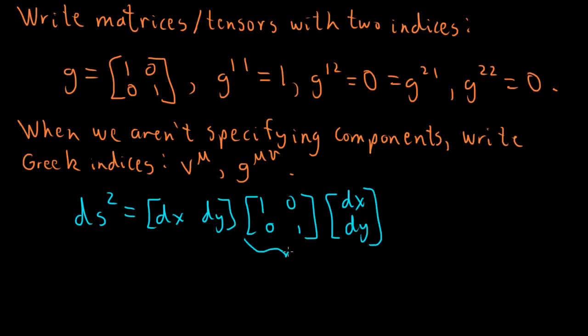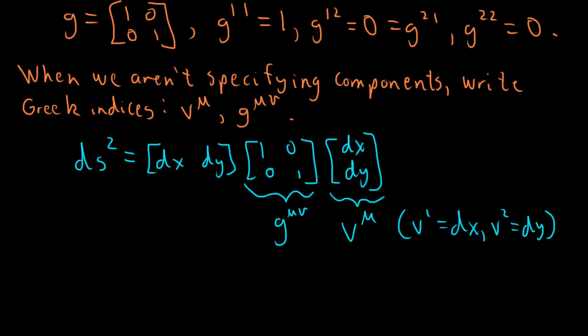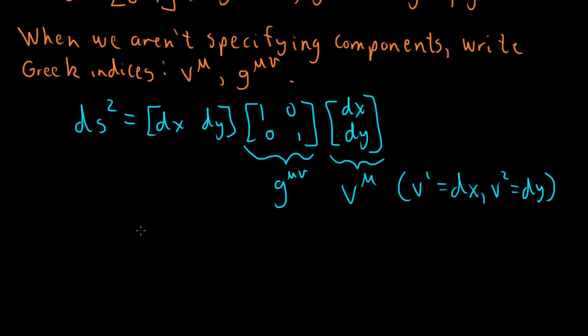So if this matrix is G mu nu, and this matrix here, let's call this just V, V mu, for example. So this means, remember, this means V1, the first component is dx, V2, the second component is dy, and that's all that means. We're just putting a mu there. So we're going to write this in a more suggestive way, and this is called the Einstein summation notation. So we're going to define this guy as, this is our V, this is also V because it's the same vector. So this is also V mu.